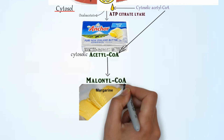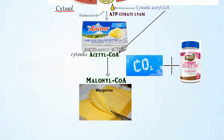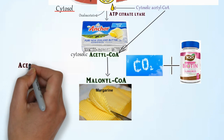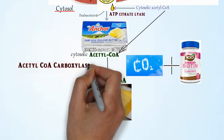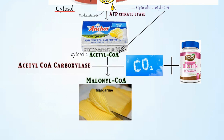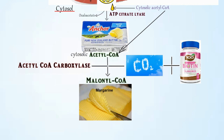The cytosolic acetyl CoA is then converted into malonyl CoA with the help of carbon dioxide and vitamin B7 (biotin), using the enzyme acetyl CoA carboxylase. To help you remember: picture acetyl CoA as anchor butter and malonyl CoA as margarine — butter converts to margarine when carbon dioxide and vitamin B7 are supplied, with acetyl CoA carboxylase as the enzyme.